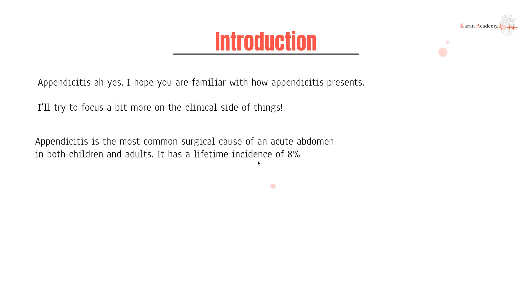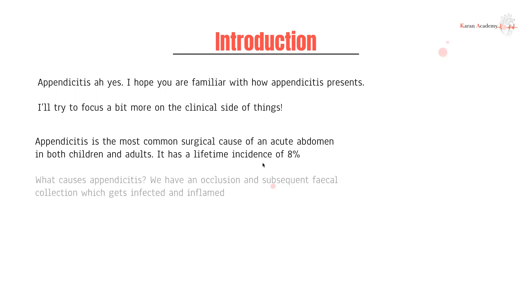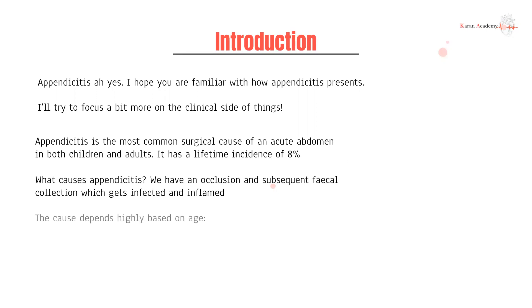Now appendicitis is the most common surgical cause of an acute abdomen in both children and adults, with a lifetime incidence of about 8%, and this is obviously quite high. What causes appendicitis? For some reason we have an occlusion near the appendix which causes collection of fecal matter which gets infected and inflamed — and that's why you have the 'itis' part of appendicitis. Relatively straightforward.